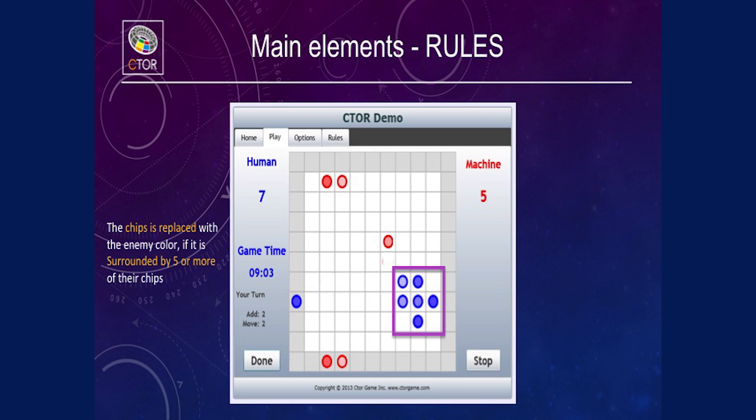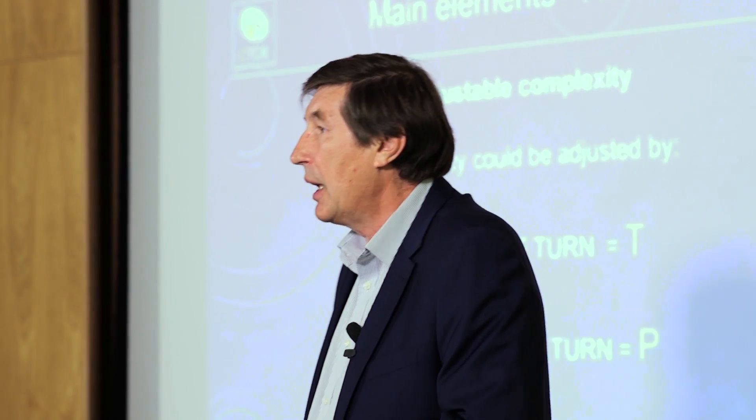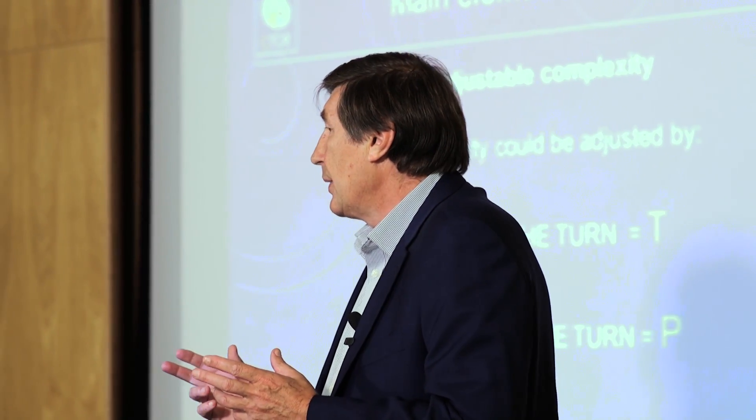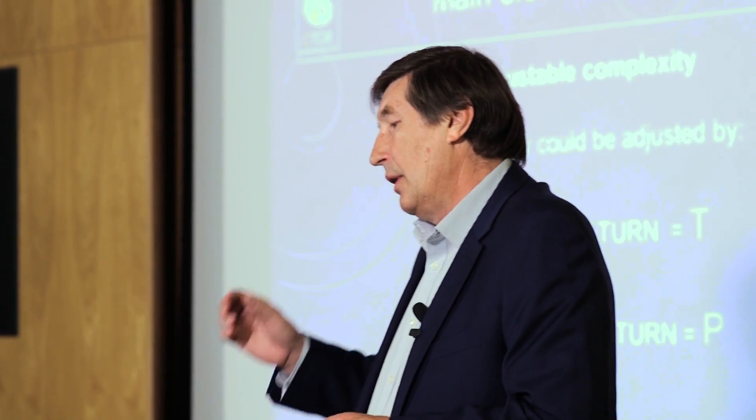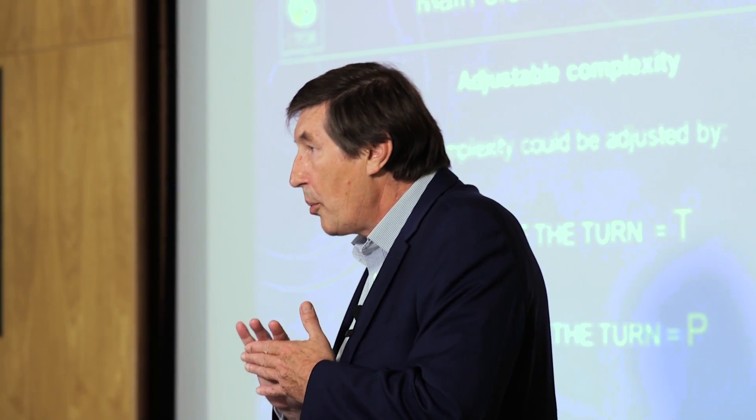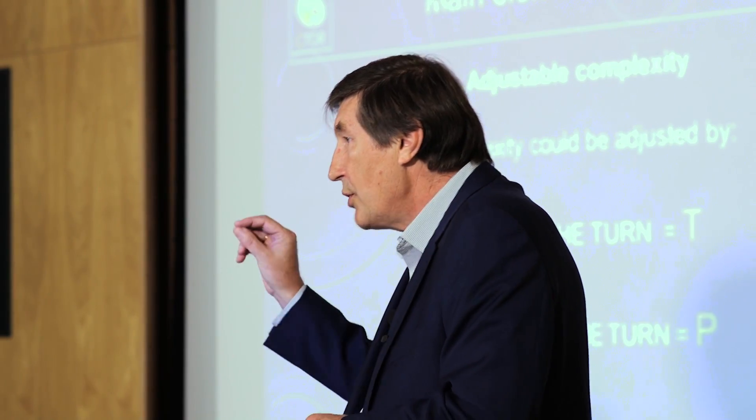I'm talking about three main points of our game. First of all is the field. Second is the rule. Each game has a rule, like one player against another player. One turn consists of three options: put chips, move chips, and replace chips. In our game we have more possibilities for one turn, and in this case we have many, many combinations for the first turn and the next turn.